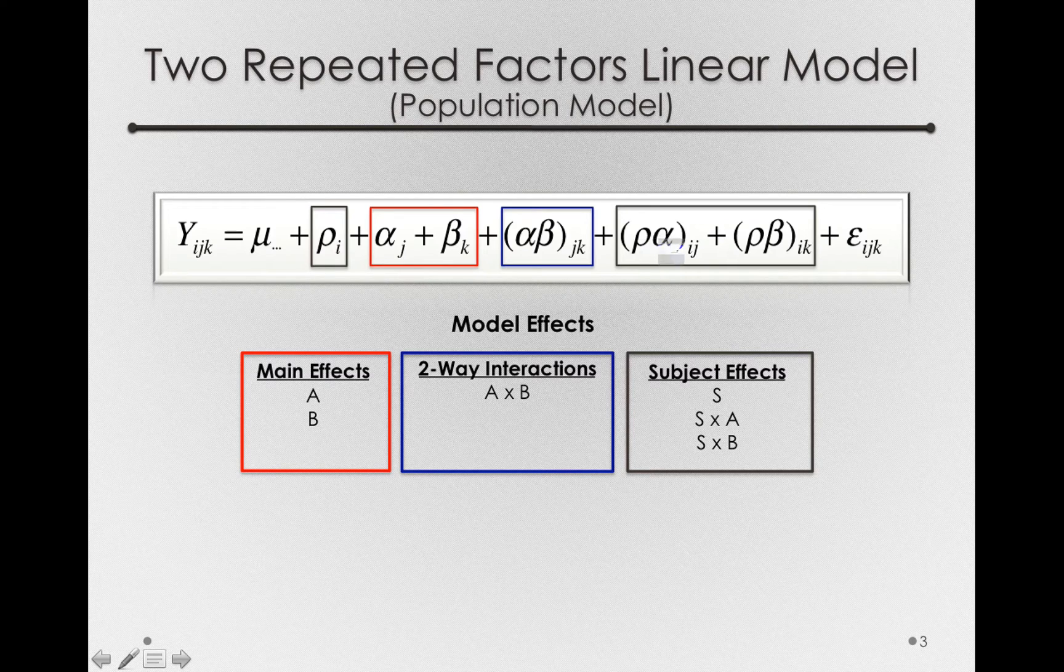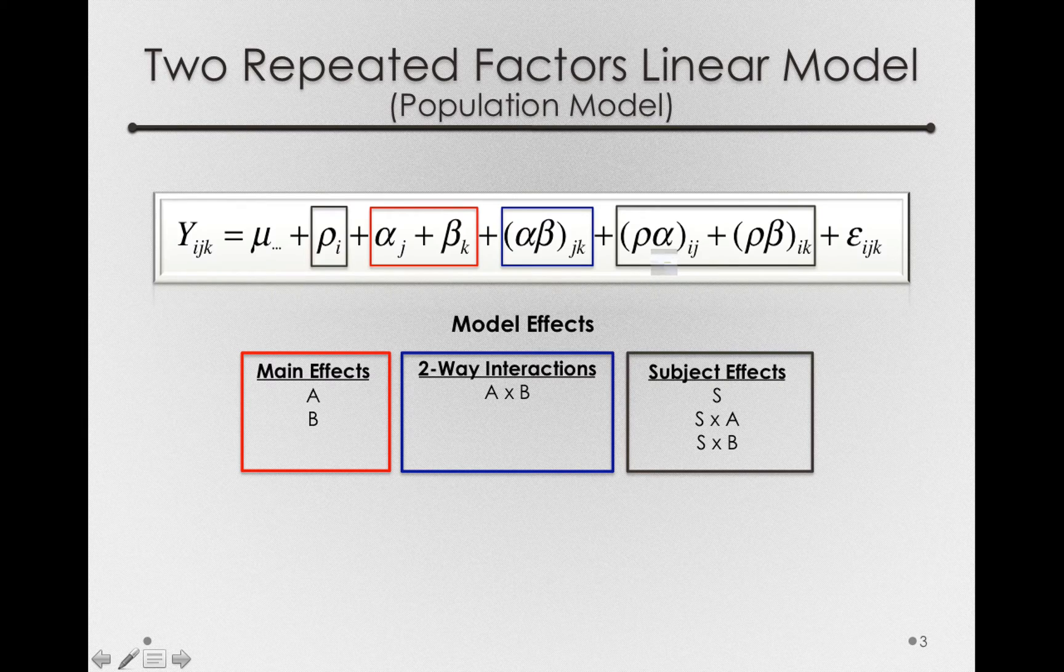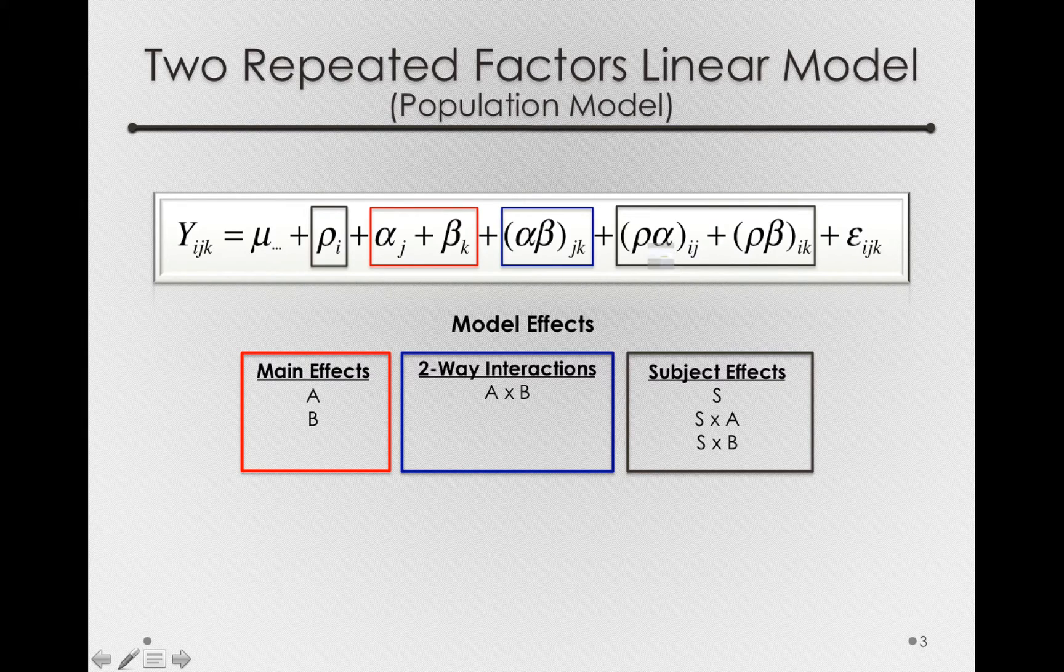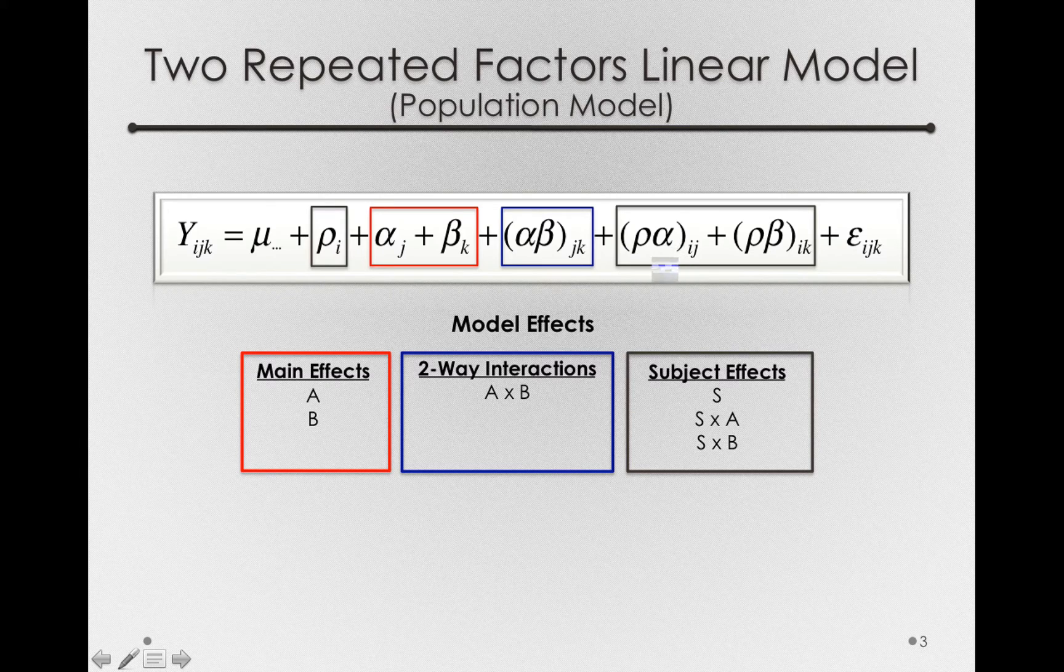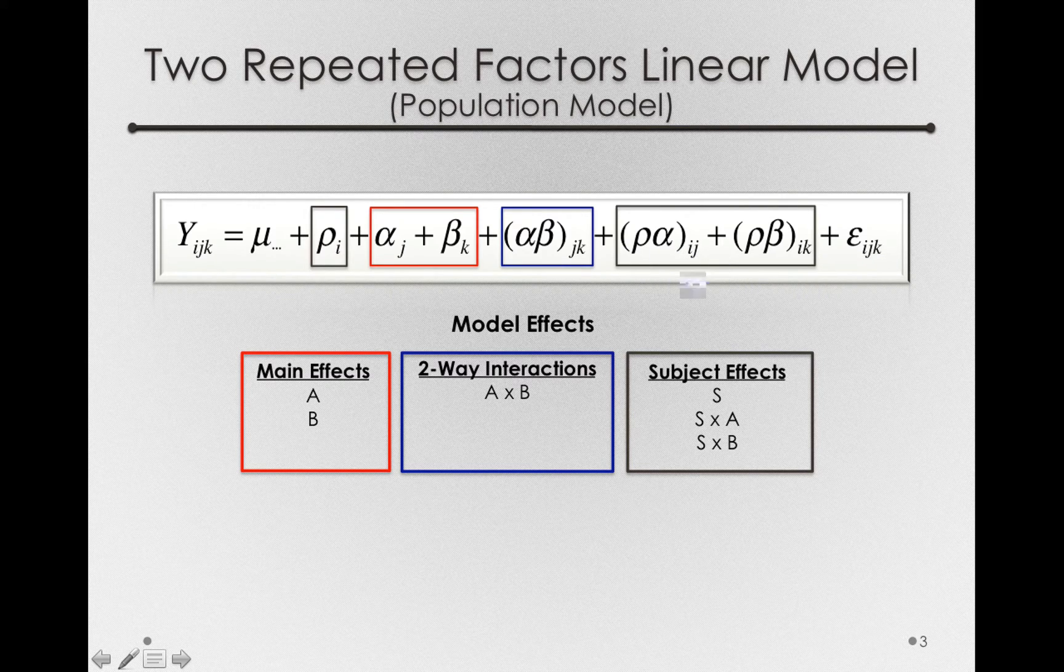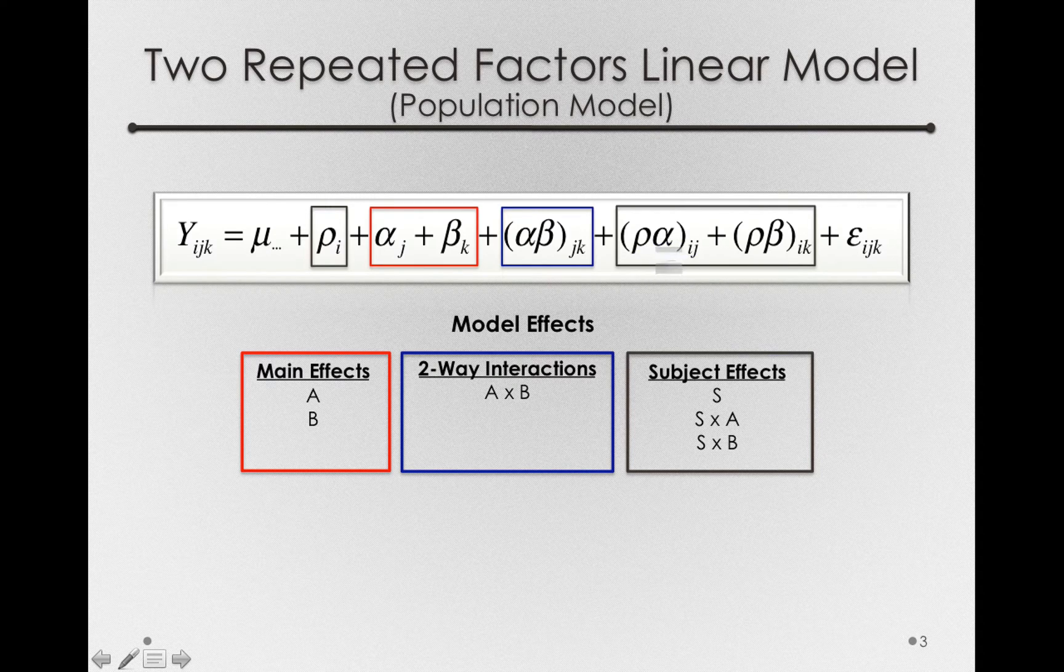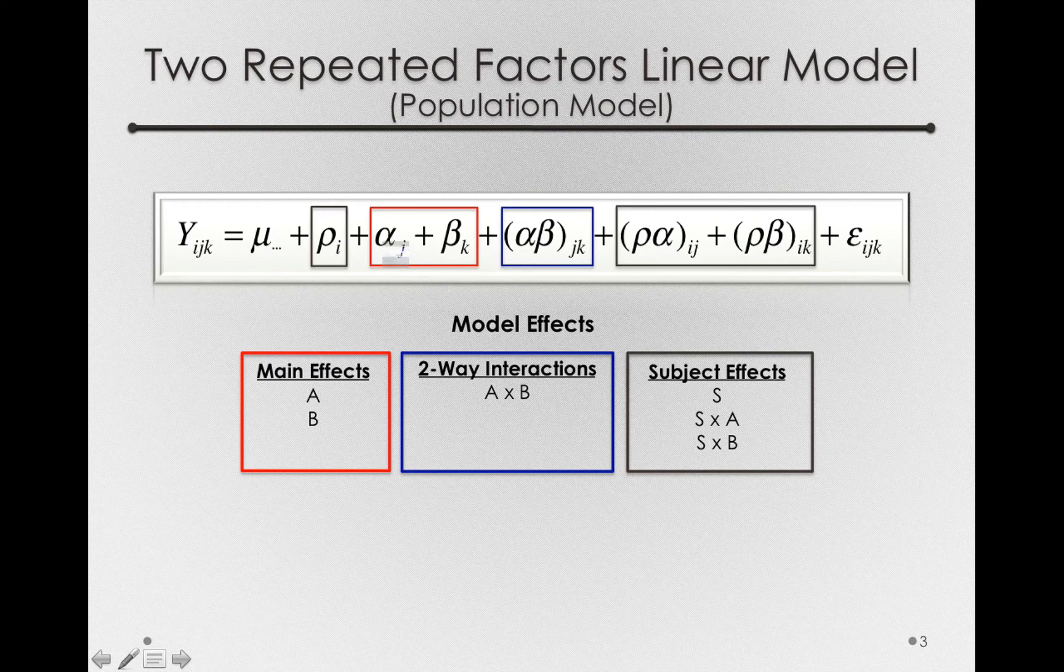The row by alpha is the degree to which individual subjects differ in the response to factor A. That was actually the error term in our previous model. In this case, we actually have degrees of freedom to estimate that independent of the overall error. I won't get into too many details there, but I want you to notice that this row by alpha is still an error term for the overall alpha effect.